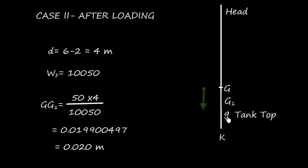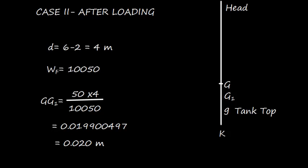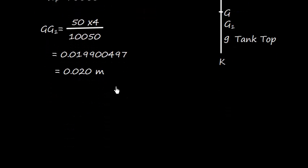So GG1 will come down like this. Since the weight is loaded at the tank top, the center of gravity will shift down. That is, GG1 will come down, and the value of GG1 is given as 0.020, which we have just now calculated.